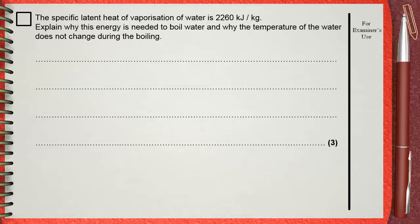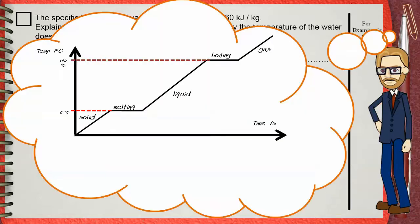You need to remember this graph. This graph represents the heating of ice in solid state starting from time zero. As time goes on and heating continues, ice starts to melt at zero degrees Celsius. During this period, even if you don't stop heating, the temperature is constant during melting until all the ice changes to water as liquid.